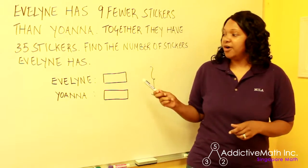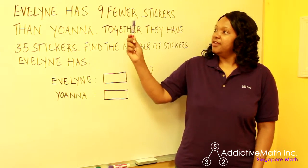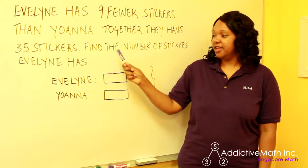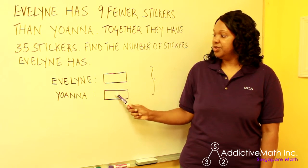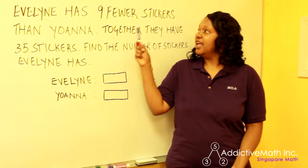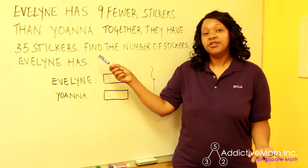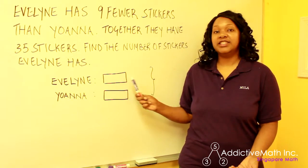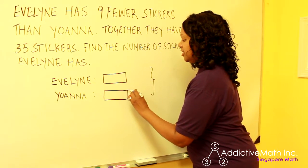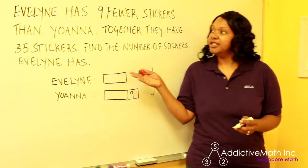So what you always want to do is write down the names of who's in the problem. In the first sentence, it tells us Evelyn and Johanna's name. So we will draw them two equal bars to start. Now this one says Evelyn has nine fewer stickers than Johanna, which also means that Johanna has nine more stickers than Evelyn. So you just want to make sure that your bars represent what it says.